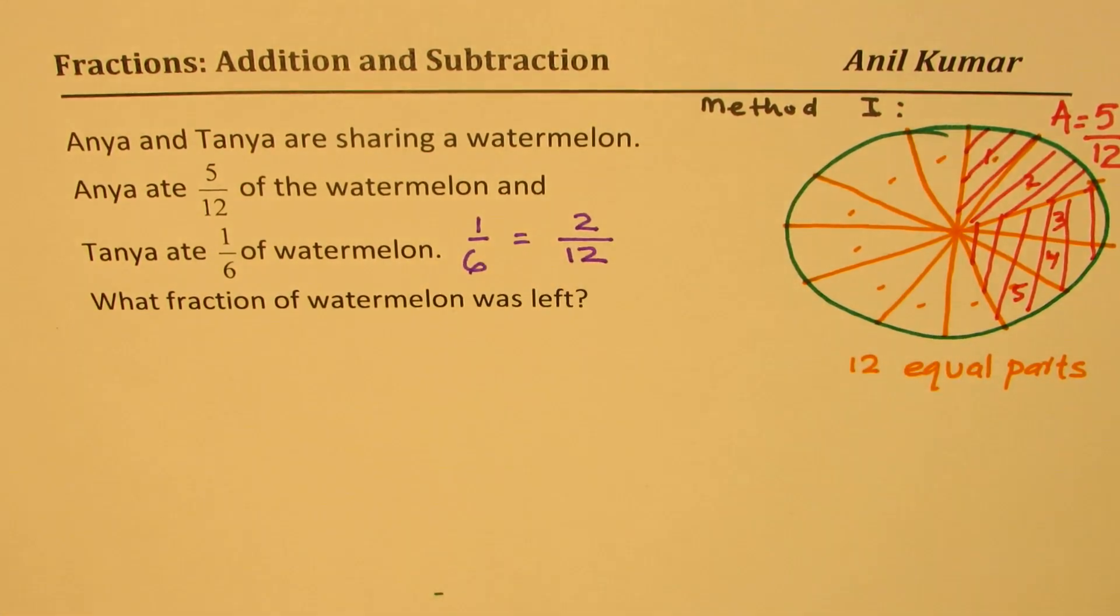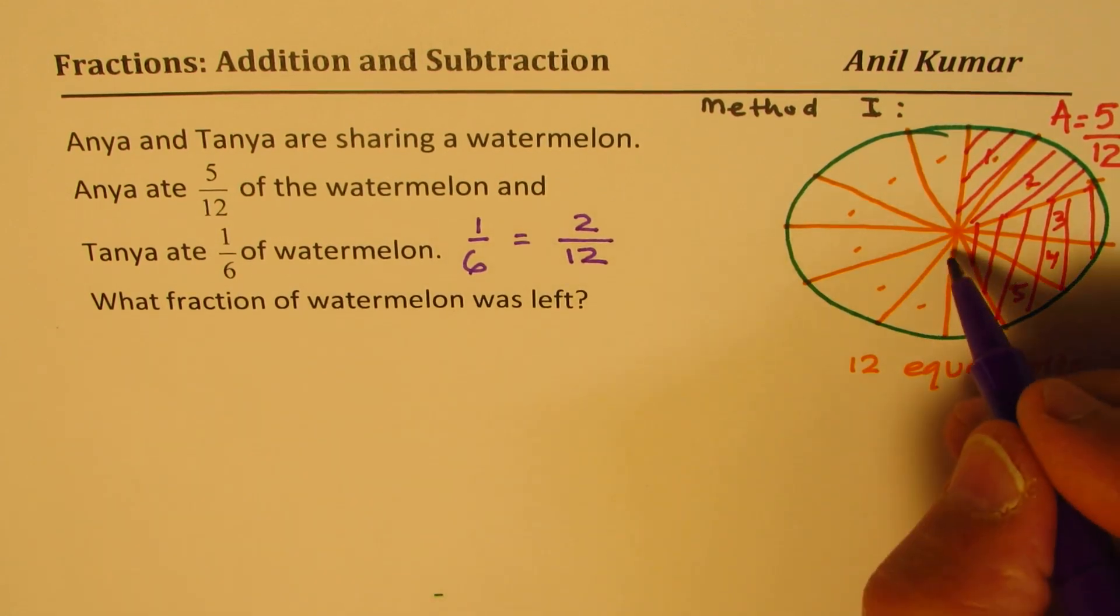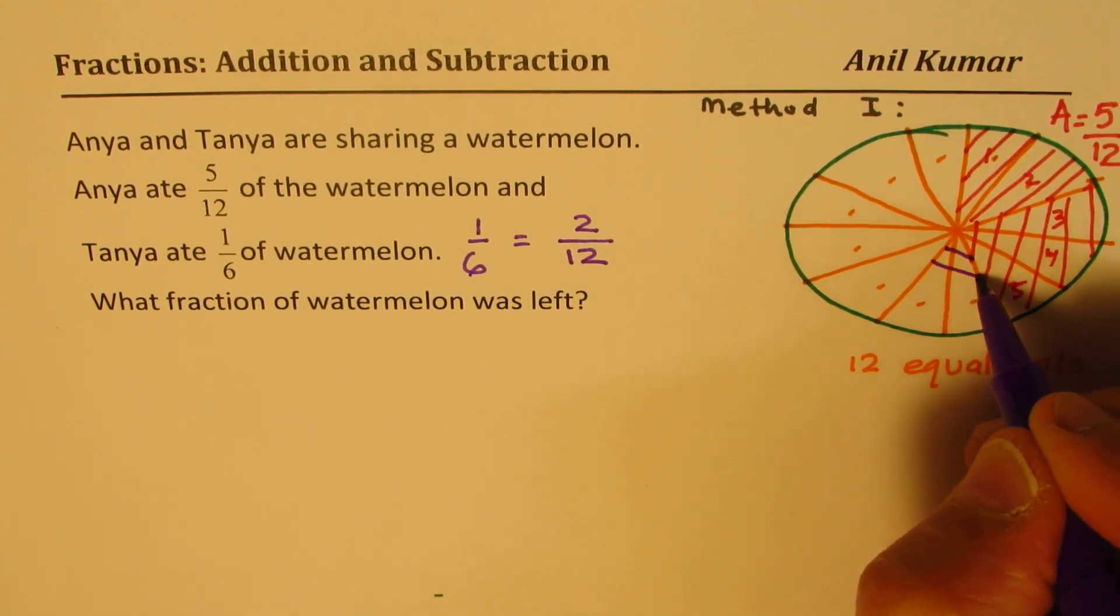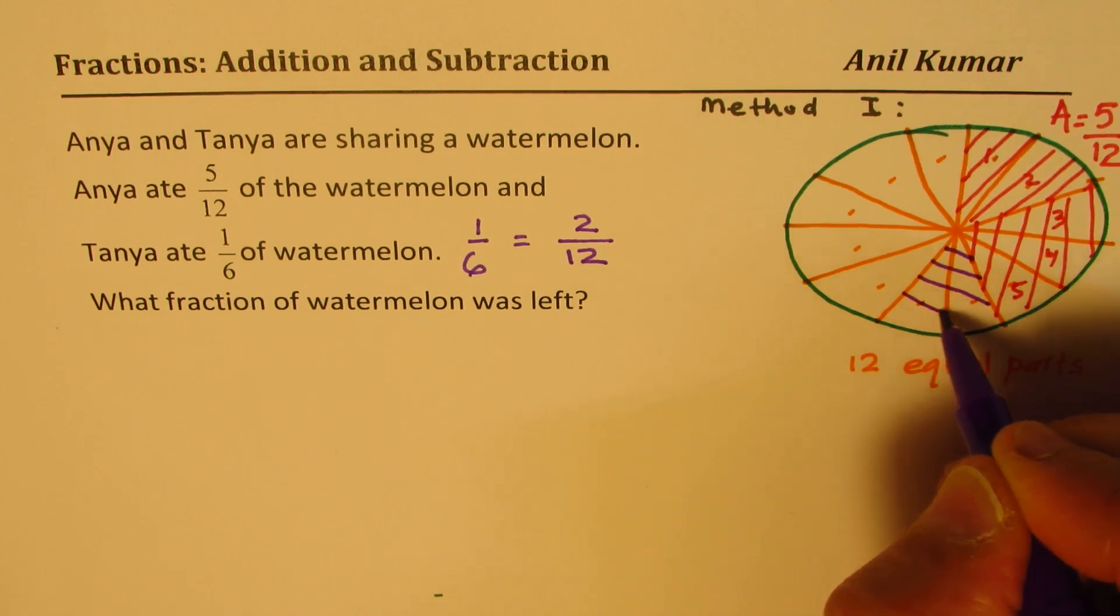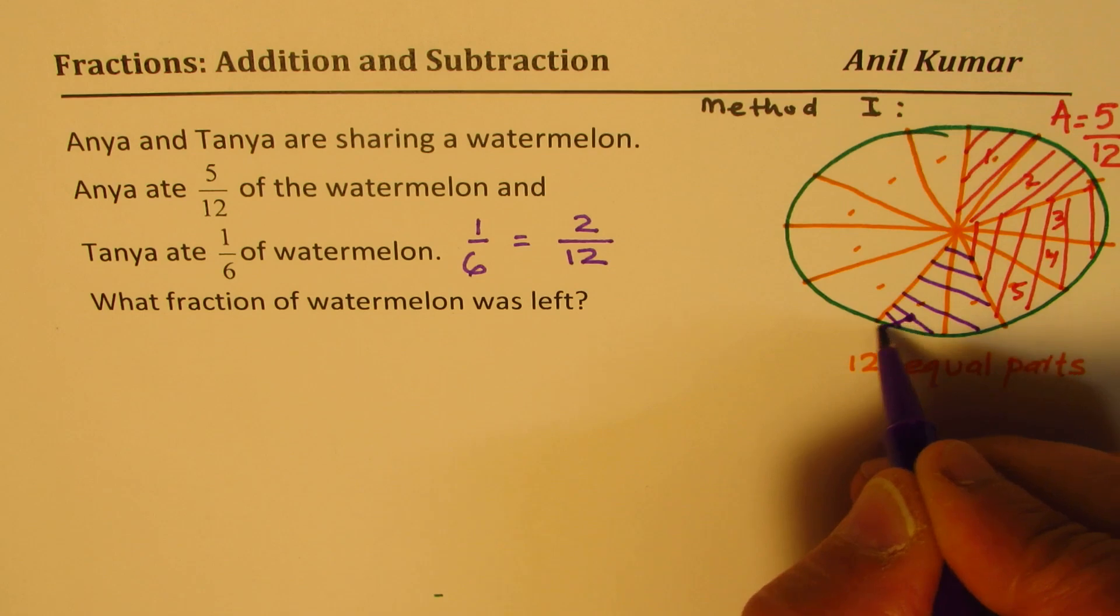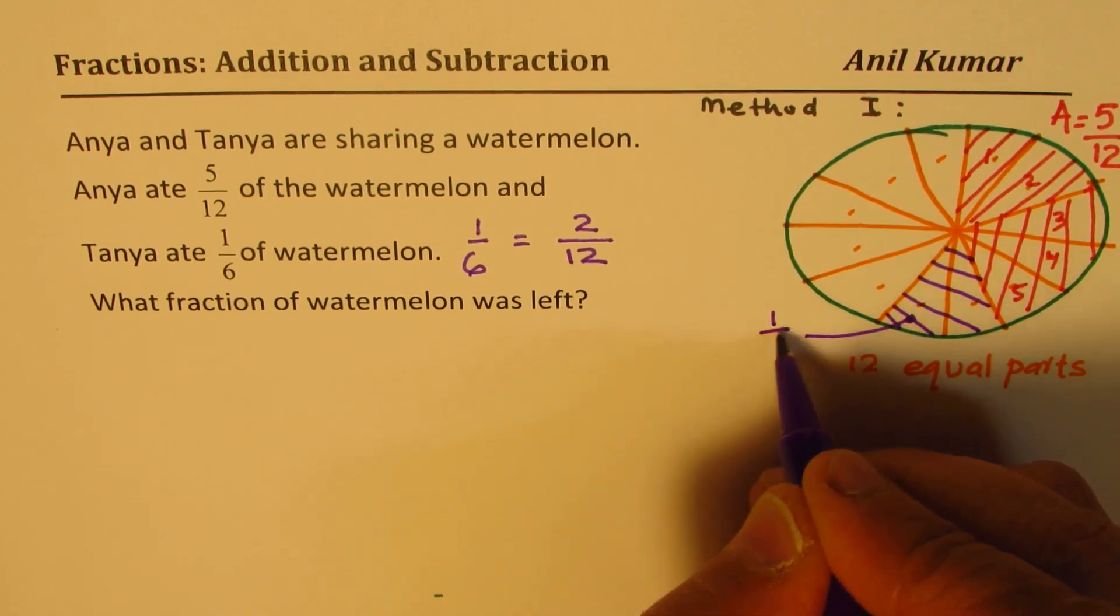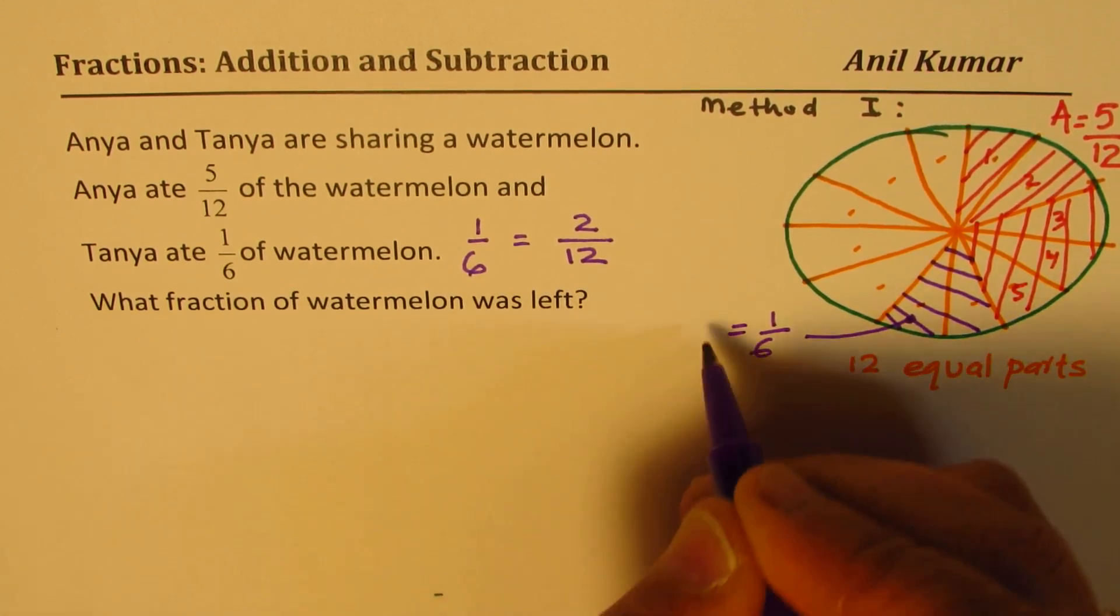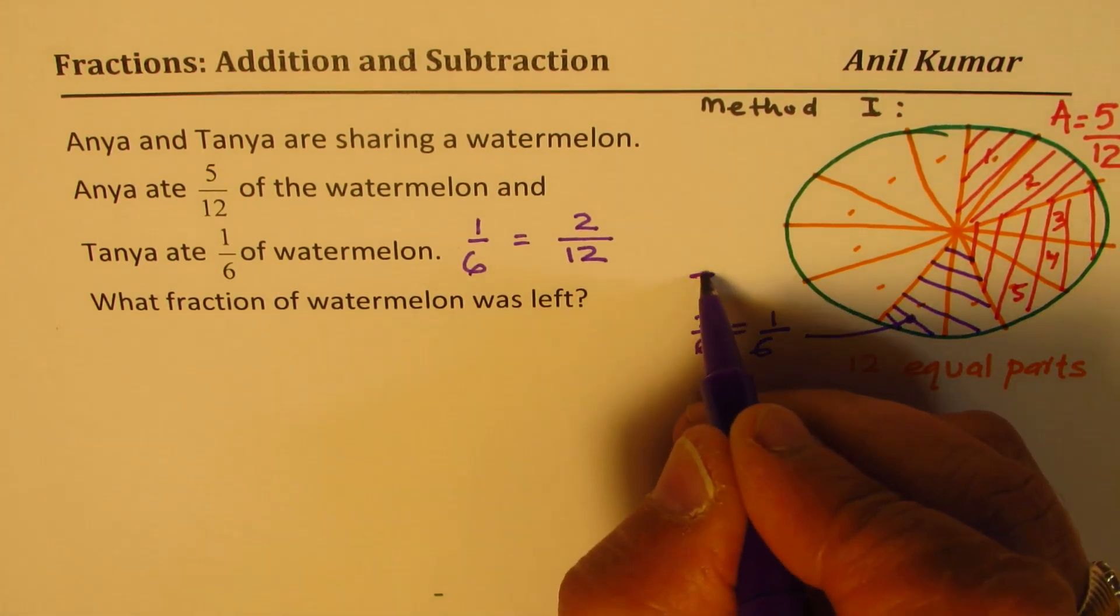So she ate 2 out of 12. So 2 out of 12 means these two. So this for us is 1/6th or 2 out of 12. Both are same. This is for Tanya.